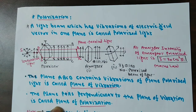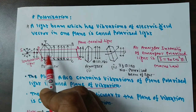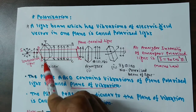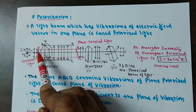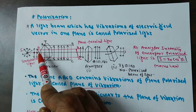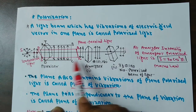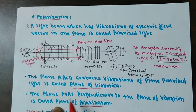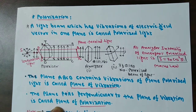The plane perpendicular to the plane of vibration is called the plane of polarization. ABCD is the plane of vibration. The plane perpendicular to this plane of vibration is called the plane of polarization. PQRS is perpendicular to the plane of vibration. A plane PQRS that is perpendicular to the plane of vibration is called the plane of polarization.